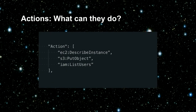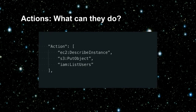Actions — this is what you're allowed to do. There's a whole predefined set of these in AWS and every single resource type has its own set of actions you can add. For example with EC2, you can describe an instance or get the availability zones. With S3, you can put objects in, take objects out, list all the buckets. And IAM even has its own set of actions, such as list users or get MFA device.